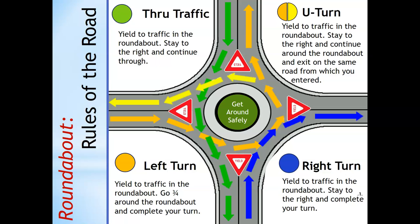The orange arrows show how to navigate making a left-hand turn. Remember, always yield to oncoming traffic. Go three quarters around the roundabout and complete your turn. If the driver wants to make a U-turn, they would simply continue around the roundabout and exit on the same road from which you entered. That's indicated by the yellow arrows.